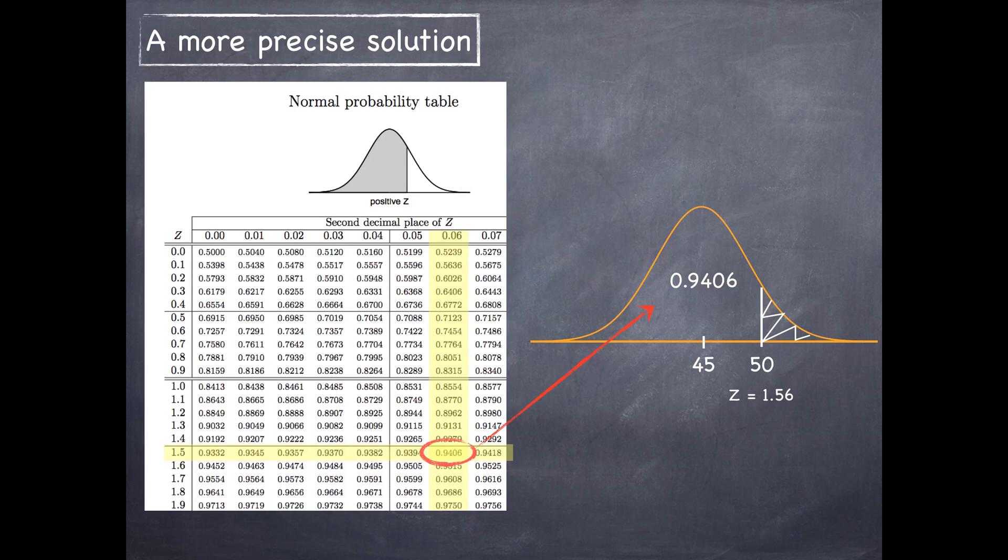But this is not the area that I'm actually interested in. I actually want to find the complement of that. That's simply going to be 1 minus that probability that we obtain from the normal probability table. That's 0.0594.